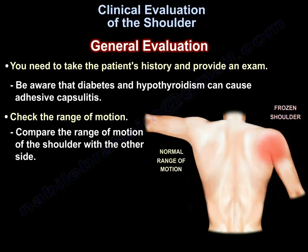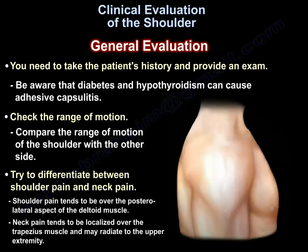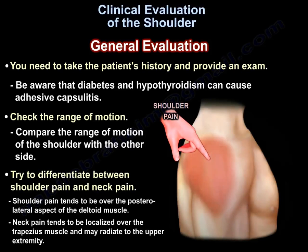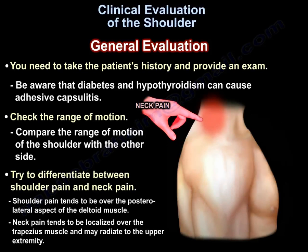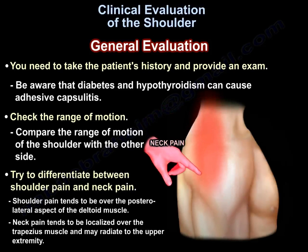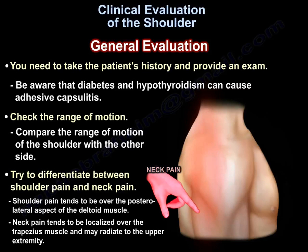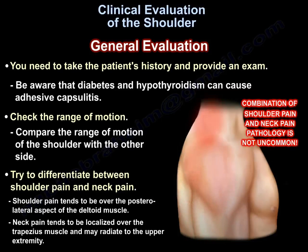Try to differentiate between shoulder pain and neck pain. Shoulder pain tends to be over the posterolateral aspect of the deltoid, while neck pain tends to be localized over the trapezius and may radiate to the upper extremity. A combination of shoulder and neck pain pathology is not uncommon.